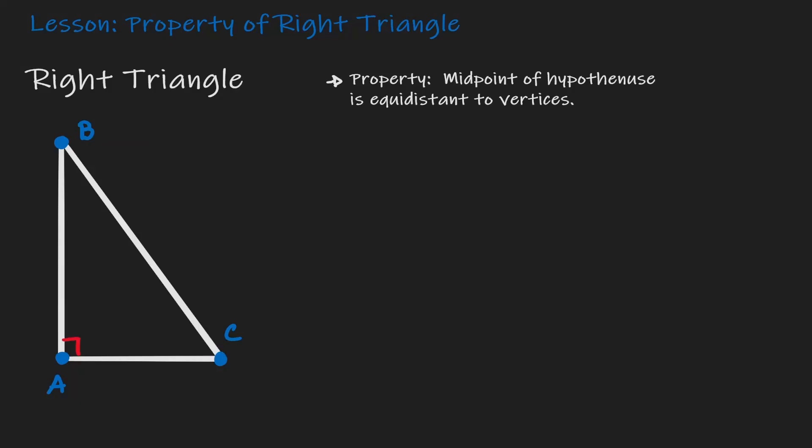Given a right triangle, if we consider the midpoint of the hypotenuse, let's put that in here in our diagram. Let's call it E.